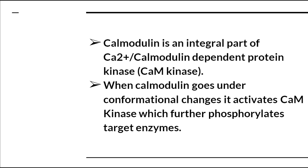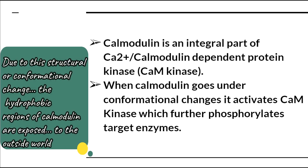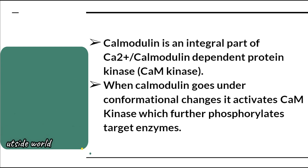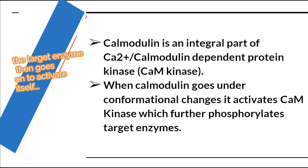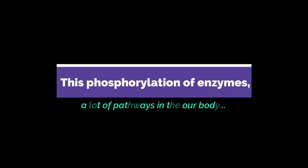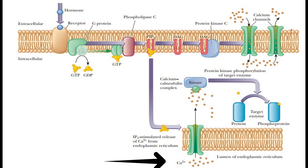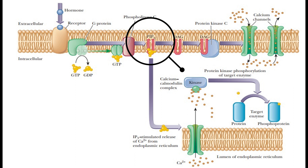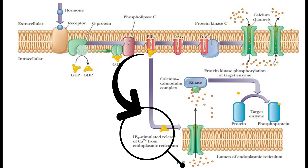When calmodulin undergoes conformational change, it technically exposes its hydrophobic regions when calcium binds to it, and these are exposed to the outside. The target enzyme then activates itself and phosphorylates many different enzymes, stimulating a whole lot of pathways in the body. As you can see in the picture, phospholipase C is acting on PIP to create IP3 and stimulate the opening of the gated ion channel, and there are calcium ions waiting to be released from the lumen of the ER.